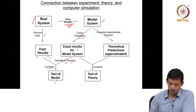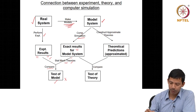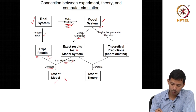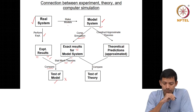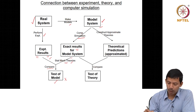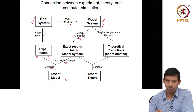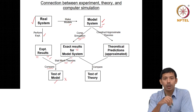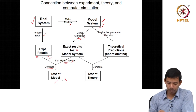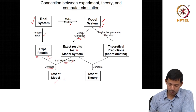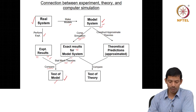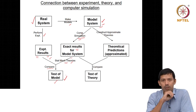If your results do not match, you need to go back and remake your model — your model was not good and needs to be remade. So you remake your model, make a new model system, perform computer simulation, get the data, and apply statistical mechanical theories to obtain the experimentally known thermodynamic quantities and match them. If they compare very well, you know that your model system is pretty good.